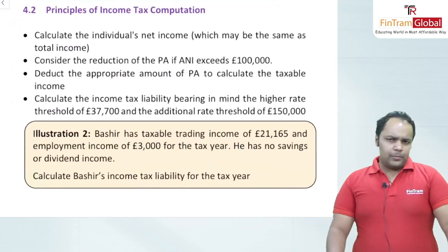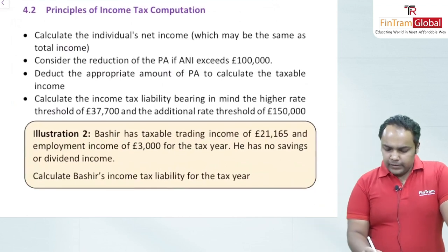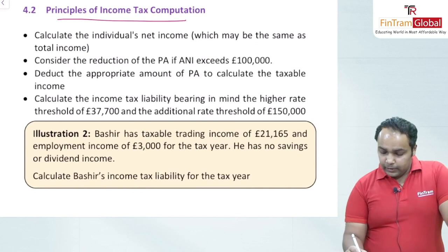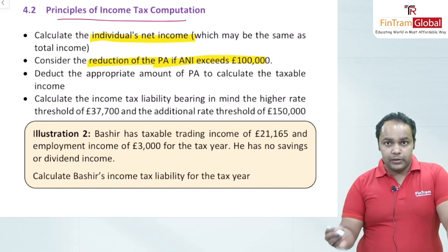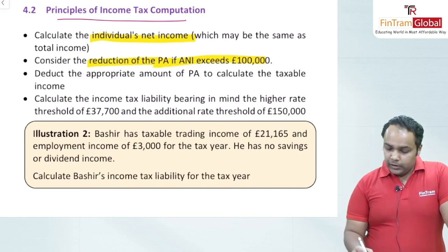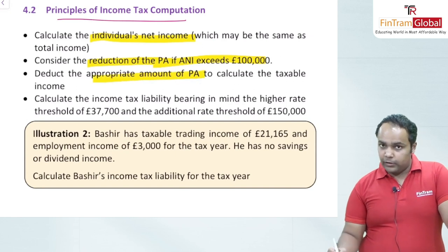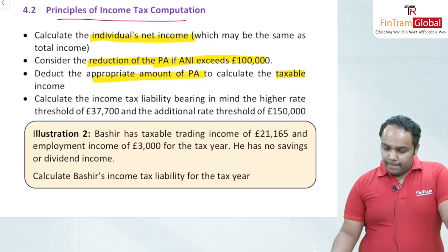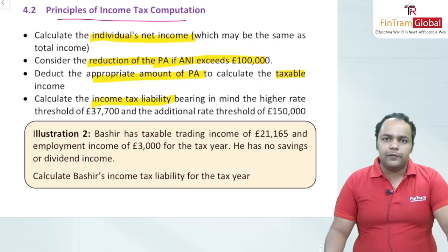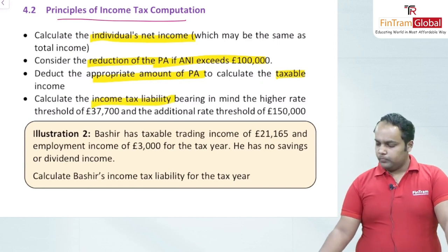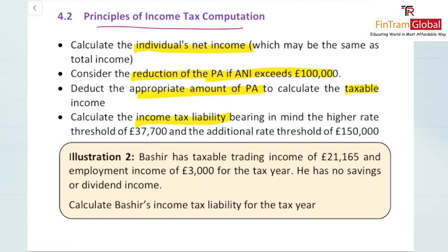To summarise the principles of income tax computation: calculate the individual's net income using the computation; consider the reduction of PA if adjusted net income exceeds £100,000; deduct the appropriate amount of PA to calculate final taxable income; and calculate the income tax liability bearing in mind the different thresholds for each source of income.